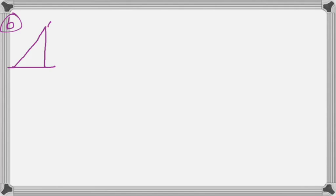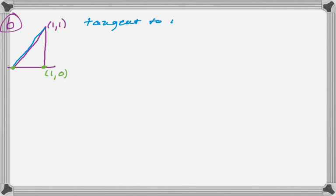The next thing we want to do is figure out the area of this little region. If you read the problem, you'll see exactly what it is — it's a triangle. So if we knew those two points, we'd know the base, and the height is obviously 1. We need to figure out that missing point. That line is the tangent to y equals x to the n at the point (1, 1), so we're going to write the equation of that tangent line.